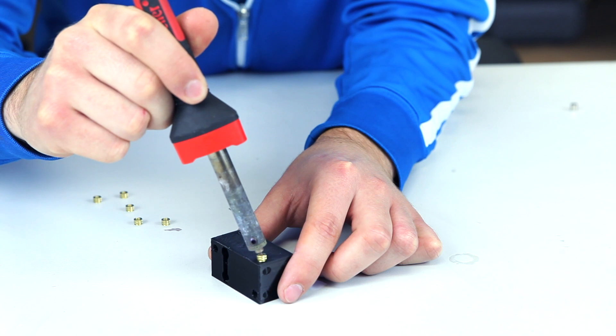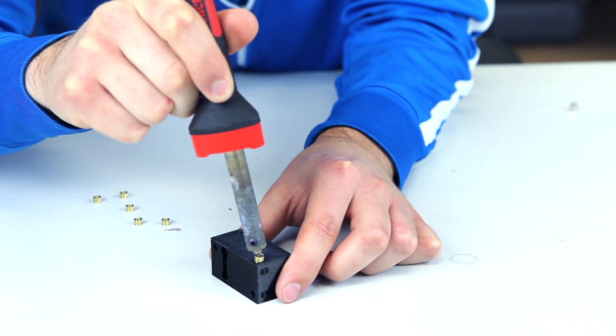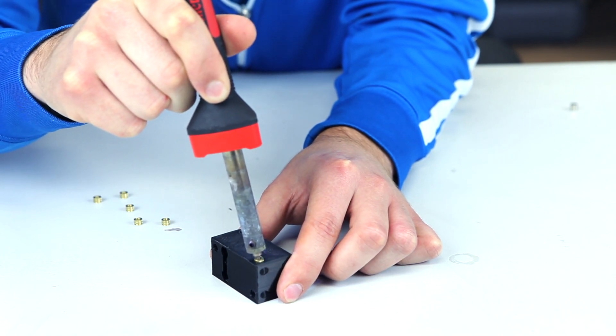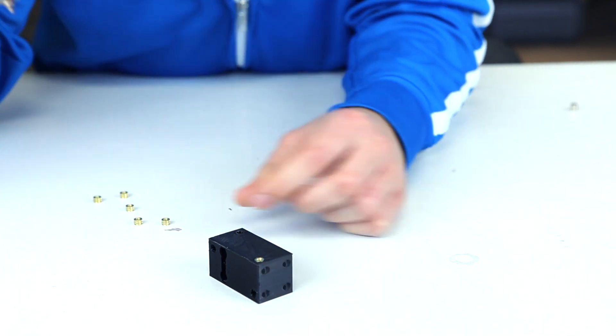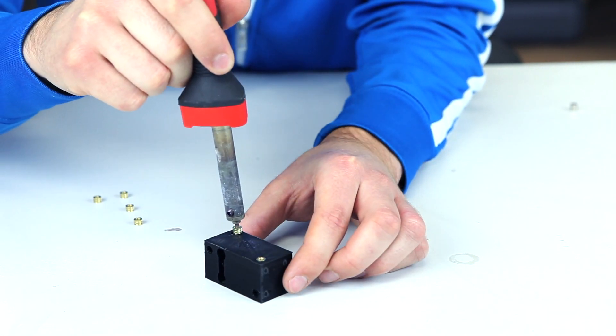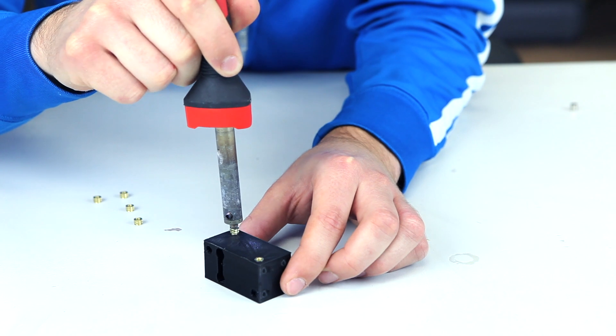For the main block, take your threaded inserts and the soldering iron, and gently press them into the sides. This may take a little work initially, but once it starts to heat up, it'll get a lot easier to press it in. Just repeat this for the three sides that need threaded inserts.